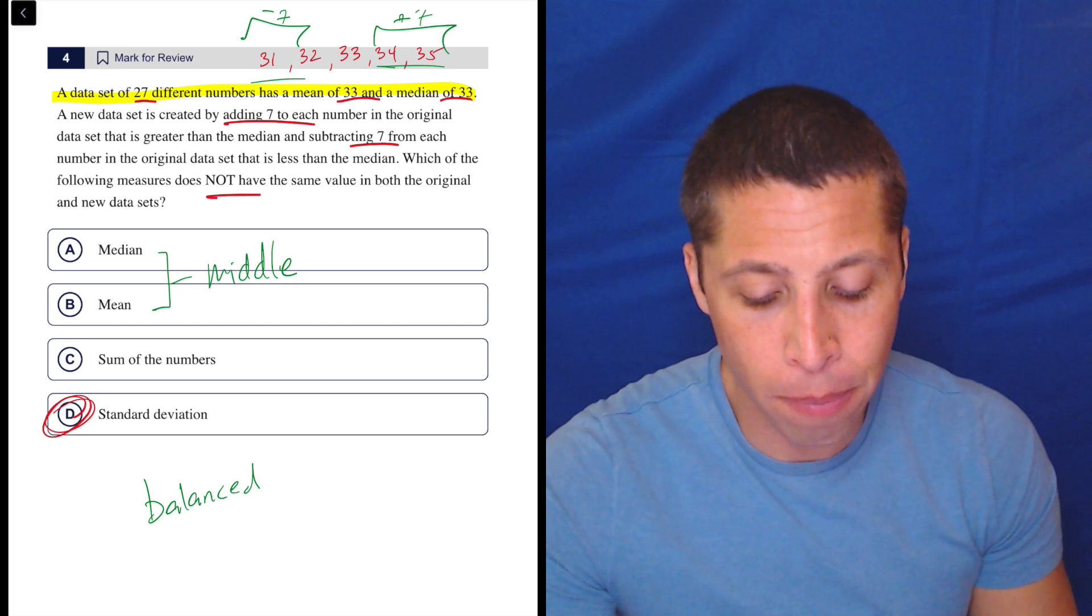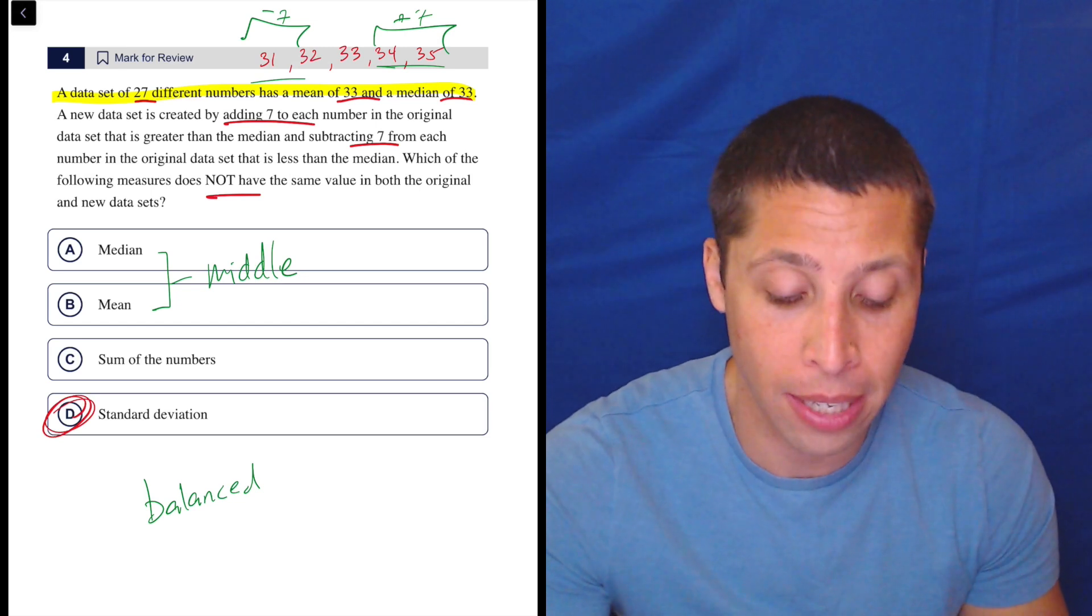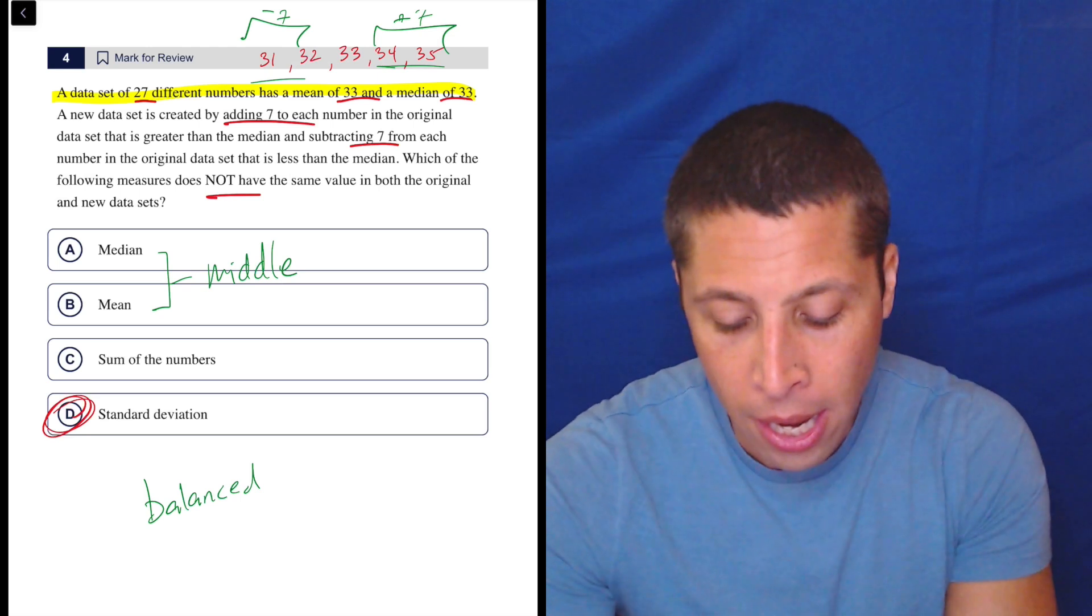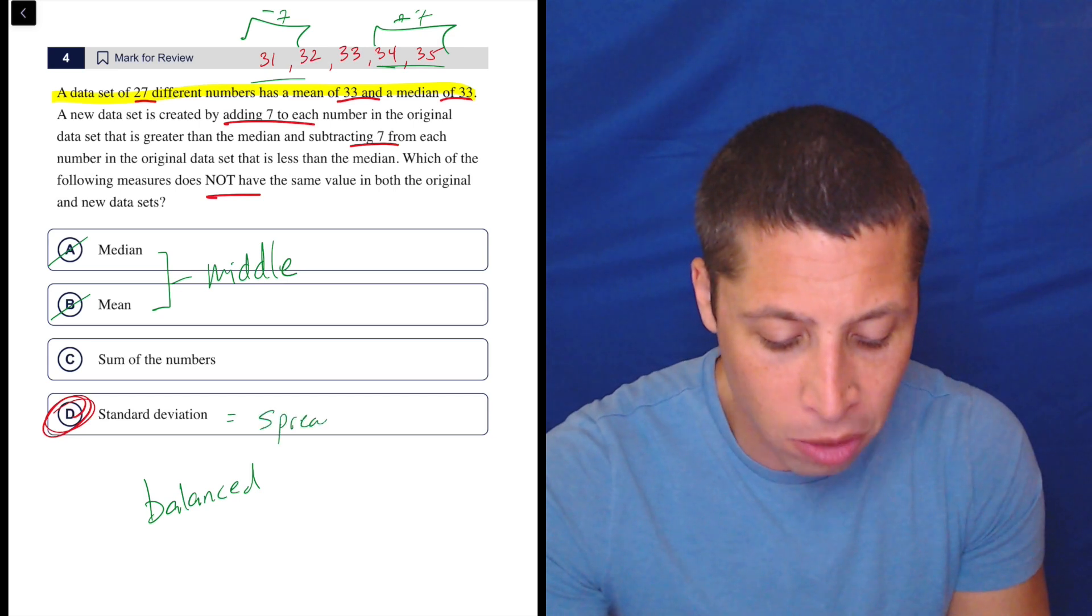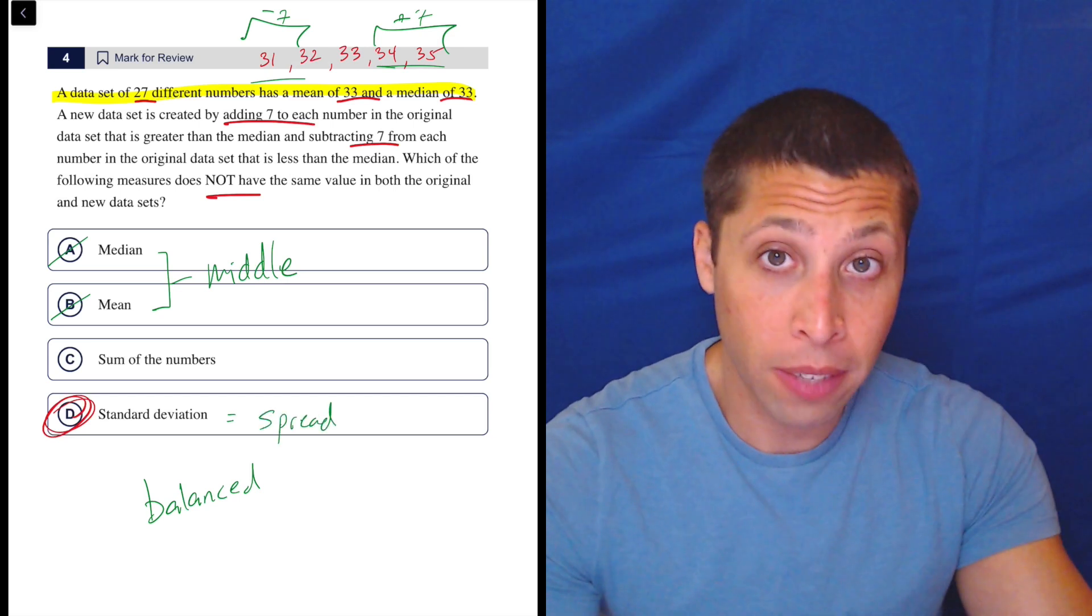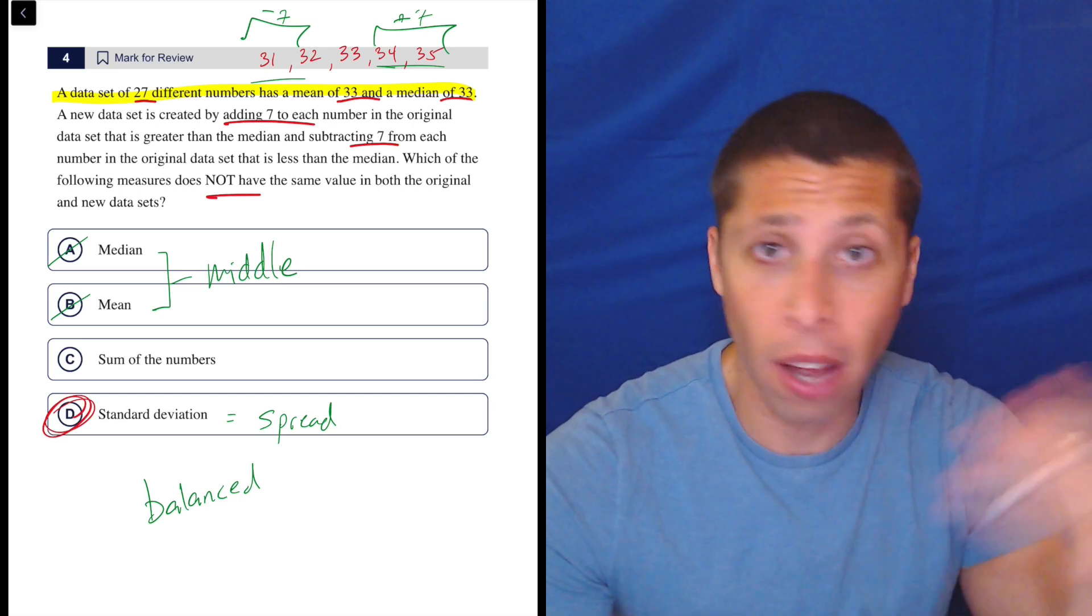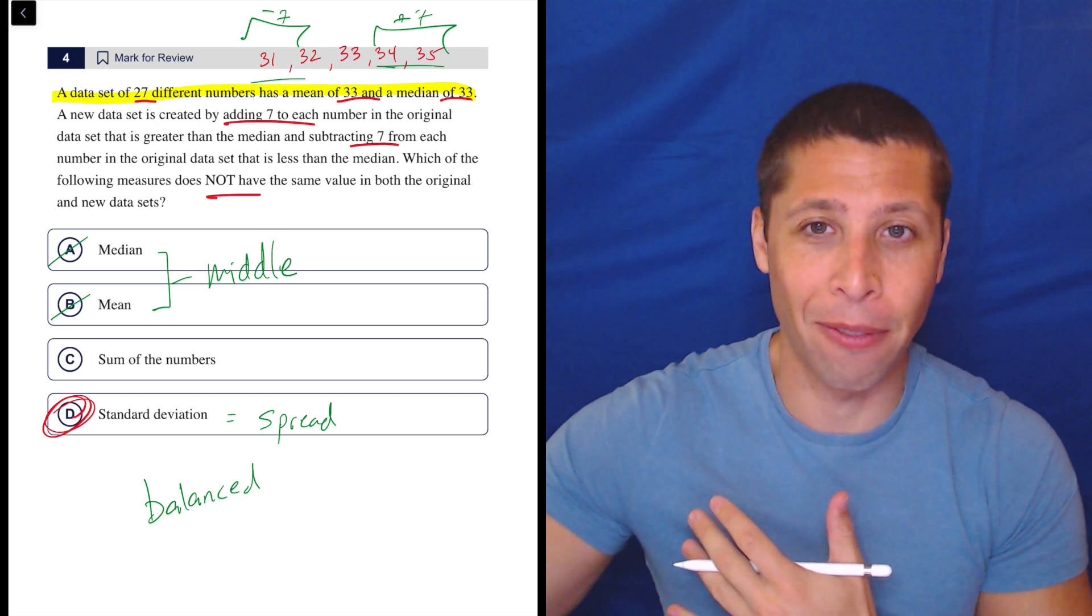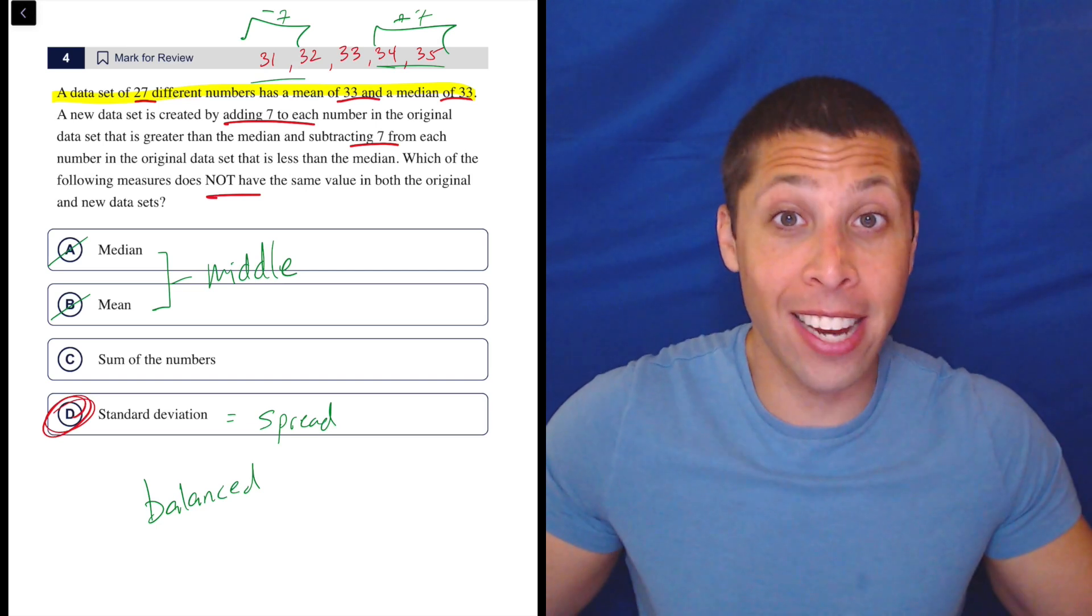So how would the middle change? It's just very unlikely to. I mean, we have proof of it, but it's unlikely to even if we just thought about the definitions of these words. So hopefully that would be enough to get rid of A and B. Now, standard deviation is a measure of the spread. So you might also think of this the opposite way, if I'm adding seven to each number that's on the right side of the list and subtracting seven from each number that's on the left side of the list, that's going to spread this data out, right?